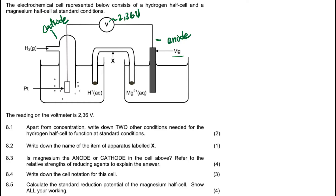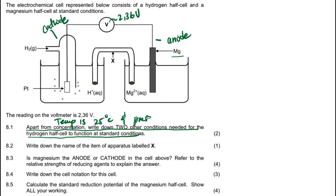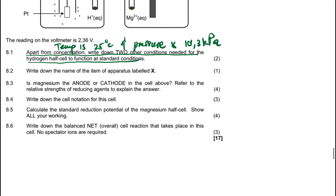The question says: apart from concentration, write down two other conditions needed for the hydrogen half cell to function under standard conditions. The temperature is 25 degrees Celsius, and the pressure is 101.3 kilopascals.